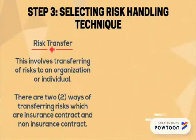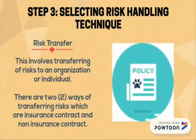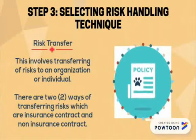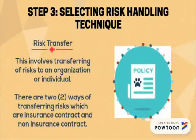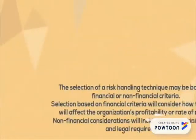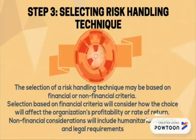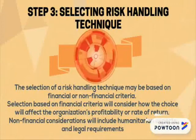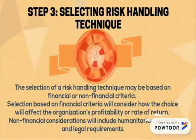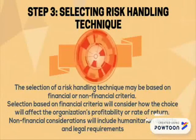The fourth technique is risk transfer. This is when you transfer your risk to an organization or individual. There are two ways risk transfer can take place: through an insurance contract or a non-insurance contract. Your selection of risk technique will be based on financial and non-financial criteria. In financial criteria, you consider how your choice will affect your organization's profit, and non-financial criteria will include human and legal aspects.